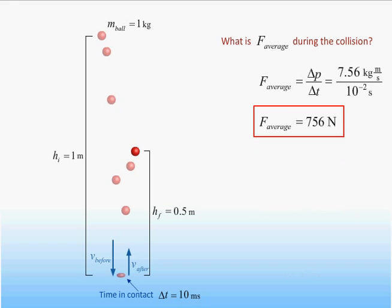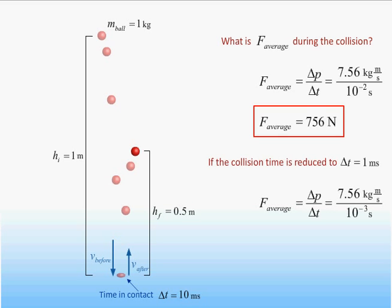We will now repeat the exact same experiment with a harder ball that flexes less and consequently spends less time in contact with the floor. If the time of the collision is reduced by a factor of 10, the average force on the ball must be increased by the same factor of 10 to keep the change in momentum the same. In other words, the average force on the ball during such a collision would be 7,560 newtons.